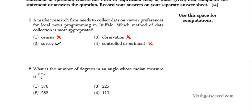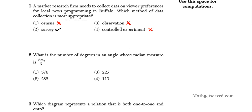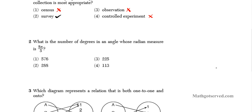Let's take a look at question number 2. It says: what is the number of degrees in an angle whose radian measure is 8π over 5? To convert from radians to degrees, you need to remember that π over 180 degrees or 180 degrees over π are your conversion factors. These two are equivalent. When you multiply a number by this conversion factor, you don't actually change the magnitude of the angle.